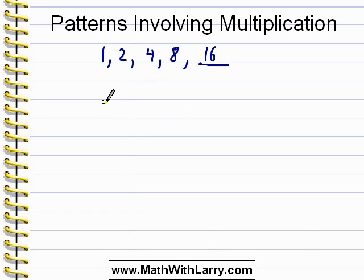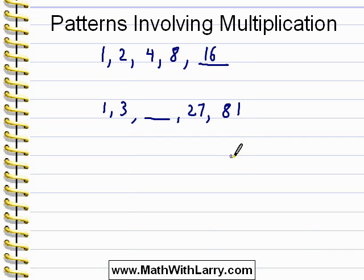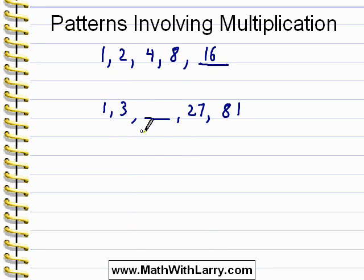Let's take a look at another example. I'm going to write 1, 3, the next number is missing, then 27, 81. We'll do a fast check to see if this involves addition, and it's pretty easy to see that it doesn't. To get from 1 to 3 we added 2, but to get from 27 to 81 we would have to add a very large number. So this pattern can't possibly involve adding a constant number to each item.